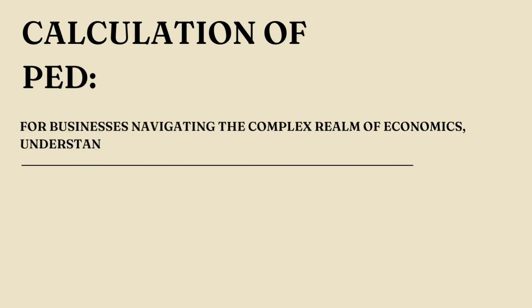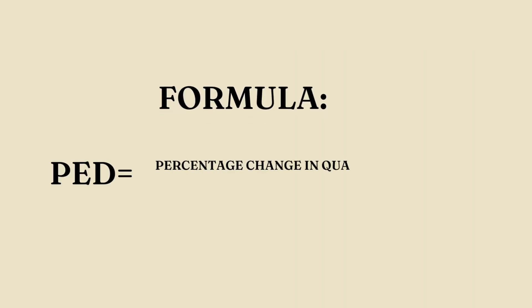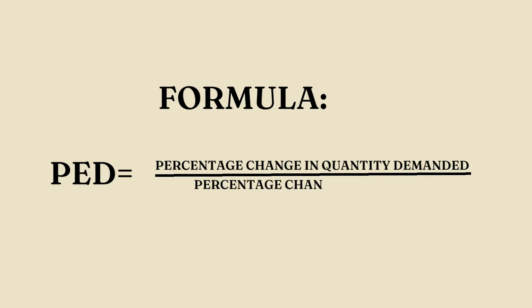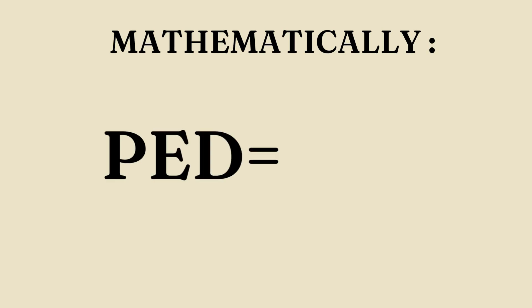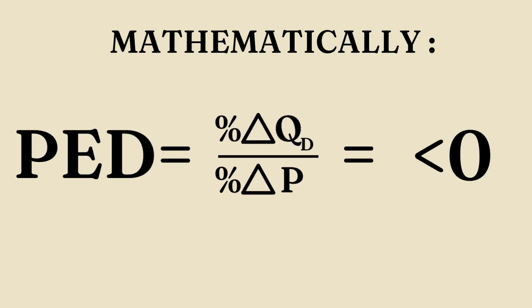For businesses navigating the complex realm of economics, understanding how to calculate PED is essential. The process is simpler than it may sound, as the formula is quite straightforward: PED equals the percentage change in quantity demanded divided by the percentage change in price. Remember, the result is usually a negative number due to the inverse relationship between price and quantity demanded. However, we often take the absolute value to focus on the magnitude of elasticity.